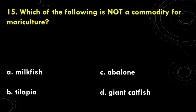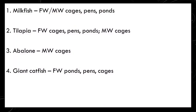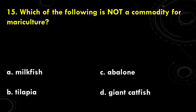Question number 15: which of the following is not a commodity for mariculture? A. Milkfish, B. Tilapia, C. Abalone, D. Giant catfish. Milkfish are commonly cultured in freshwater or marine cages, pens, and ponds. Tilapia were originally cultured in freshwater cages, pens and ponds; however, with advancements in technology such as the Malobicus and the red tilapia, tilapia can now be cultured in marine cages. Abalone are purely marine species, so they are only cultured in bottom sea cages. While giant catfish are known only to be cultured in freshwater ponds, pens, and cages. So the correct answer is D, catfish.